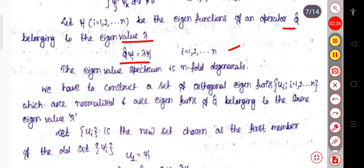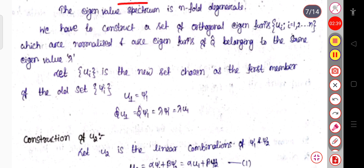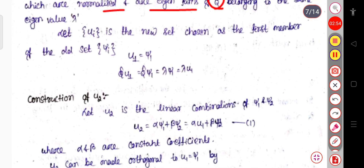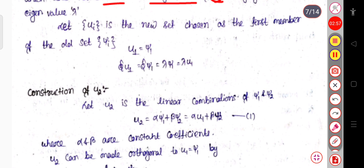We have to construct a set of orthogonal eigenfunctions uᵢ for i = 1, 2, up to n, which are normalized and are eigenfunctions of operator Q̂ belonging to the same eigenvalue λ. The first member of the new set is chosen as u₁ = ψ₁, so that Q̂u₁ = Q̂ψ₁ = λψ₁ = λu₁.